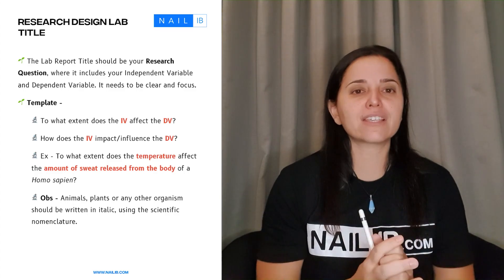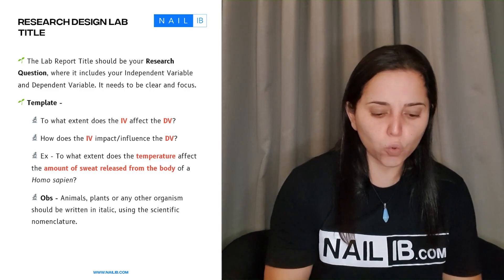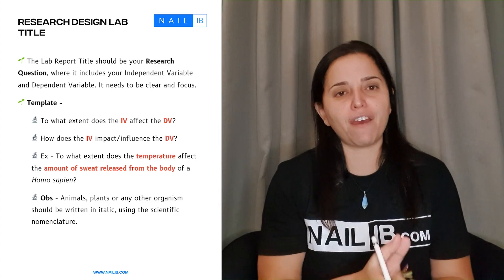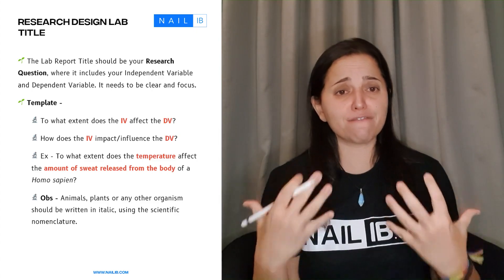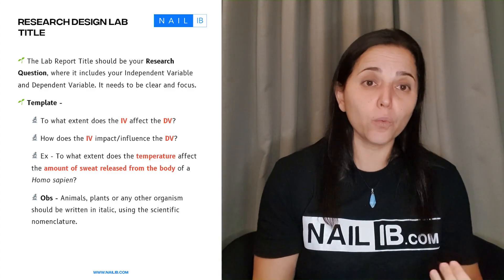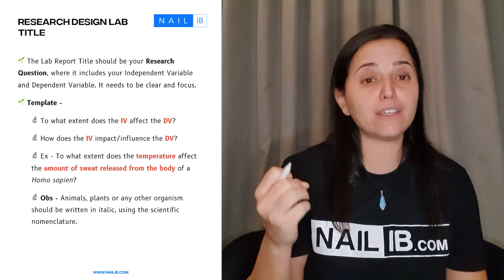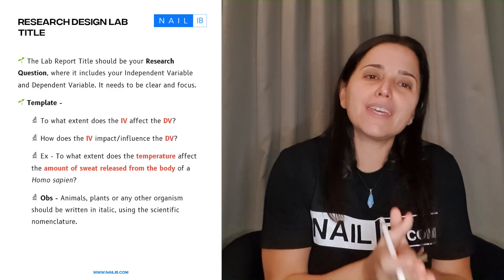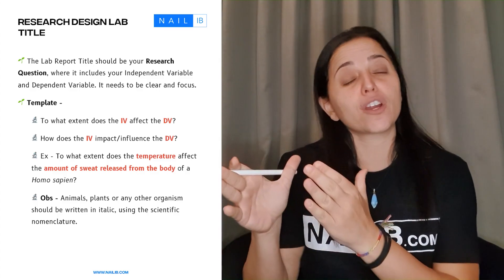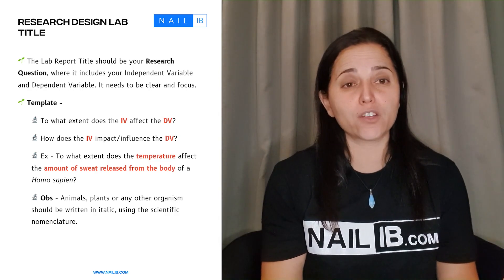Here are examples of question formats you can use. For instance: 'To what extent does the IV affect the DV?' — that is a very common research question. Another one is: 'How does the IV impact or influence the DV?' That's why it's very important that you clearly know what your independent variable and dependent variable are, because then you can just plug them into these templates.